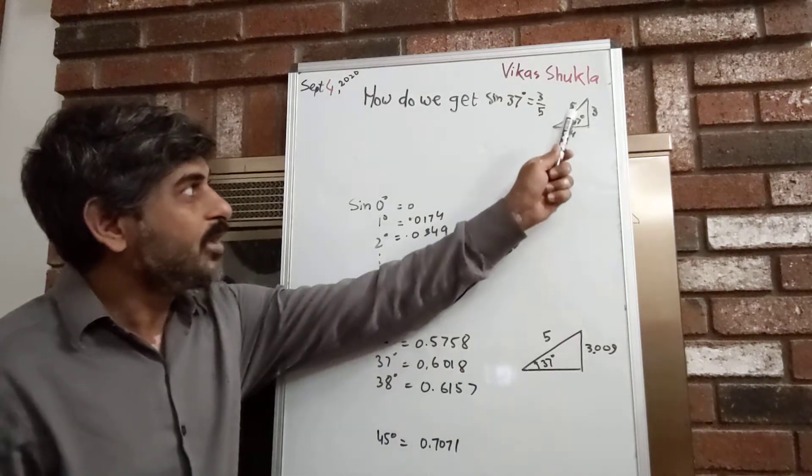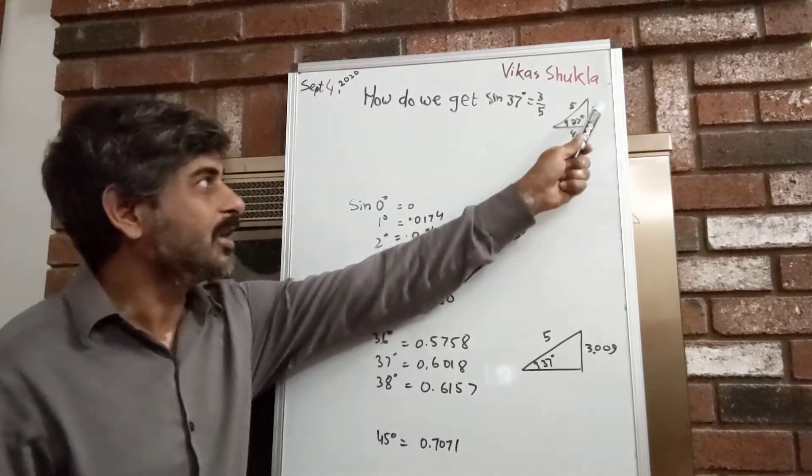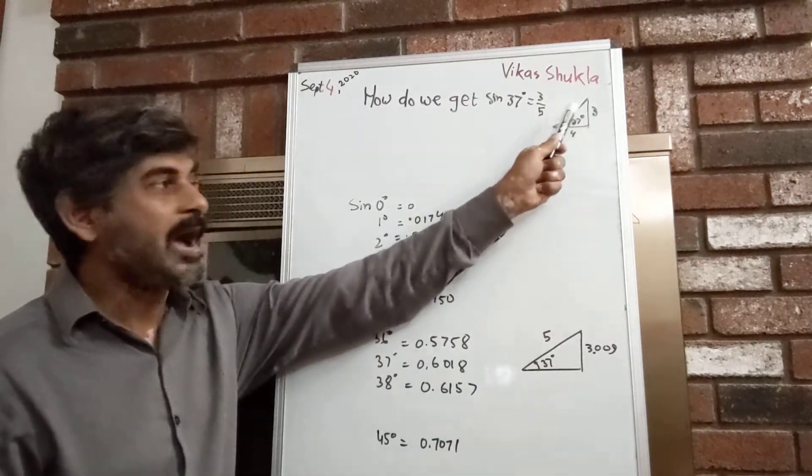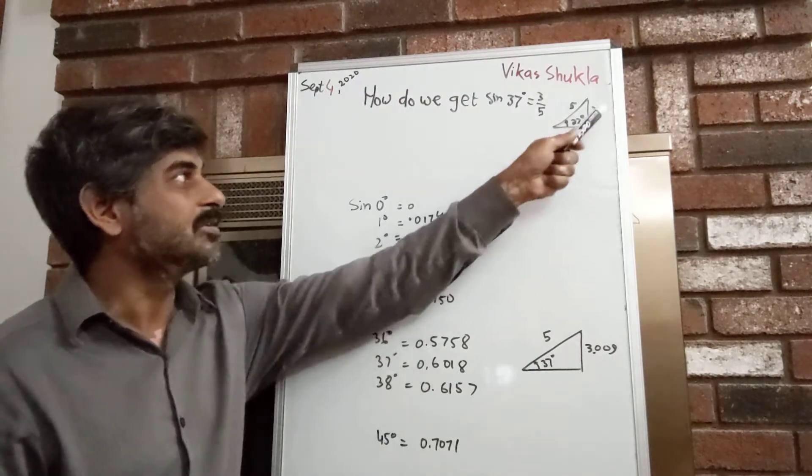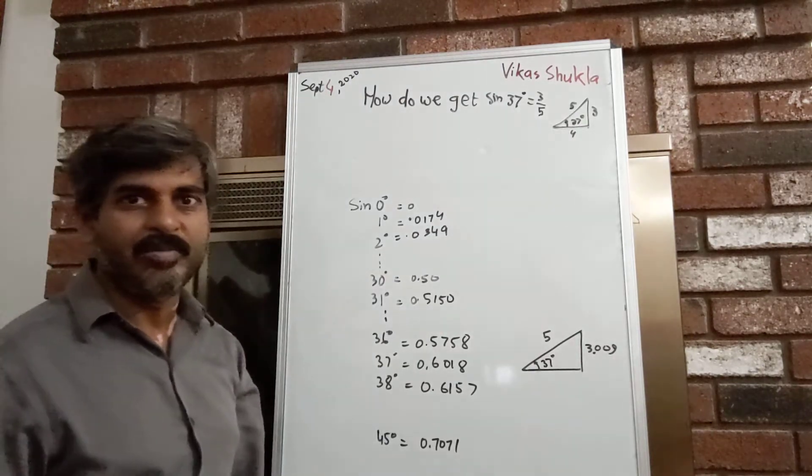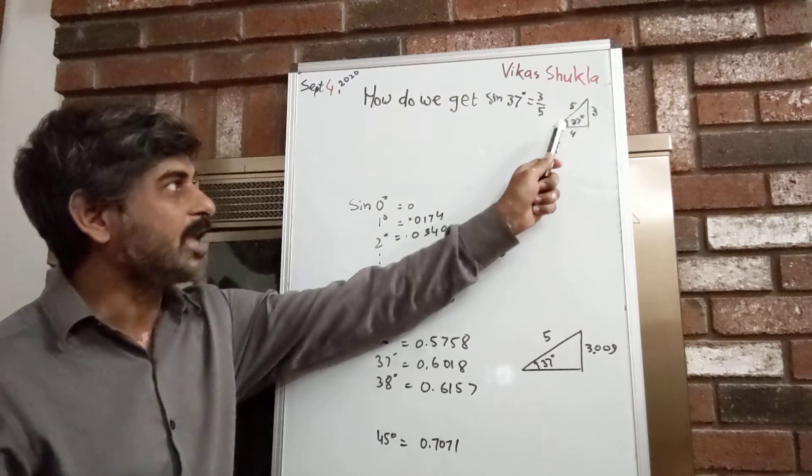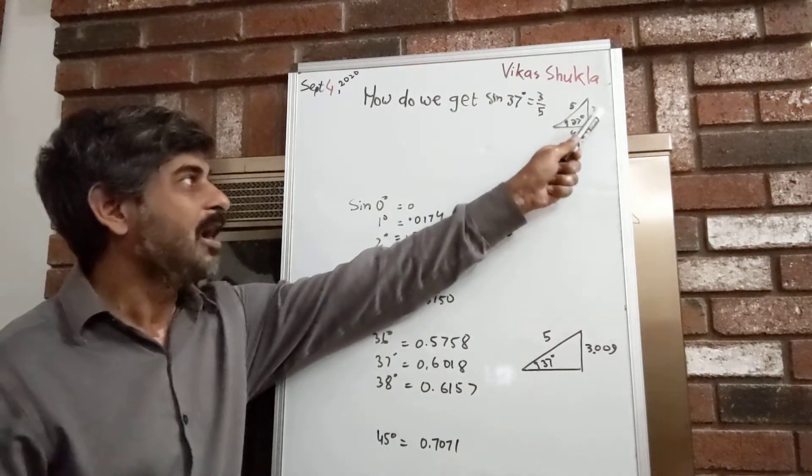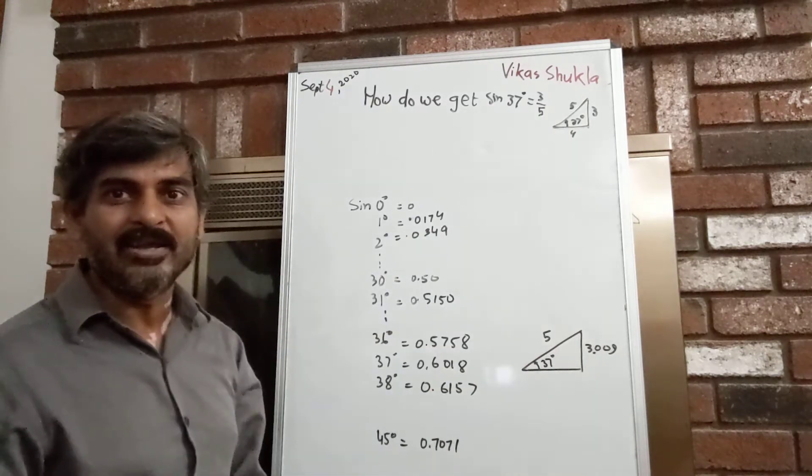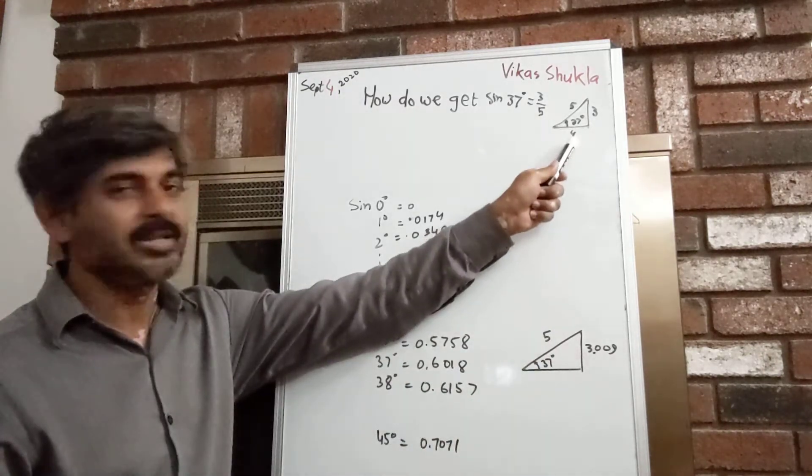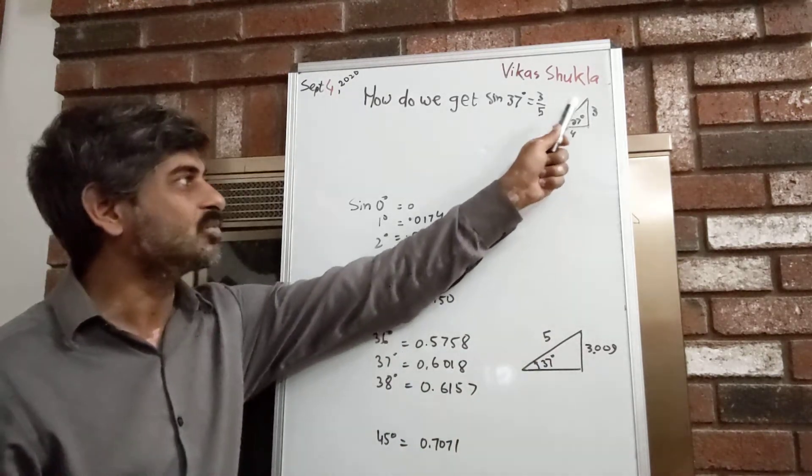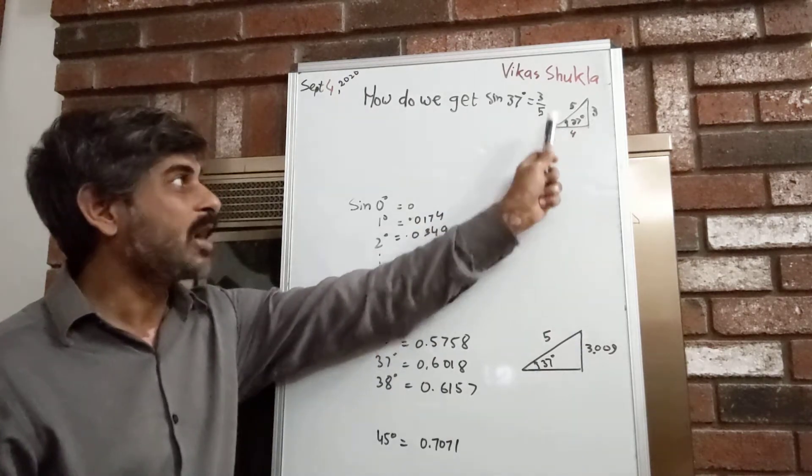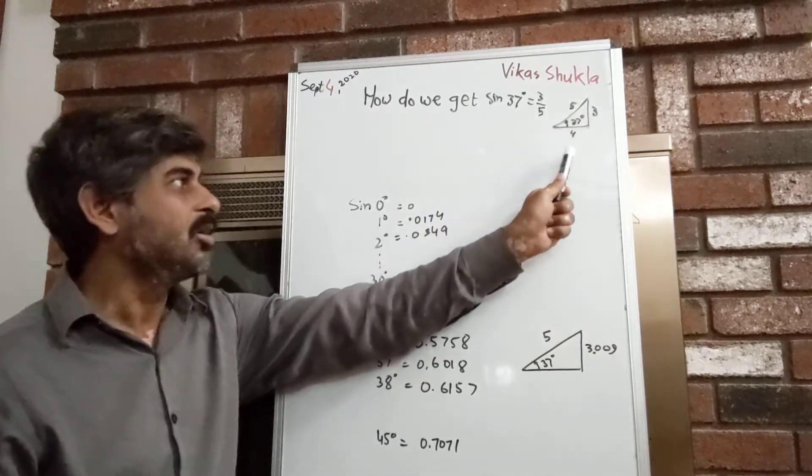If we put 37 degrees here, we get 3 here and 5 here, so sine 37 is 3/5. You can find every value—for example, cosine 37 would be 4/5, because if 3 and 5 are two sides of a right triangle, then the third side is √(5² - 3²) = √(25 - 9) = 4.